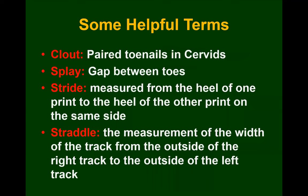We need to get a couple of terms under our belt that'll help us particularly with identifying tracks. The clout is a paired toenail in cervids. The splay is the gap between toes — when talking about the splay of a track it's about how wide that track sits and the gaps between the toes, not just the overall track width. Stride is measured from the heel of one print to the heel of another print on the same side. The straddle is the width of the track from the outside of the right track to the outside of the left track.